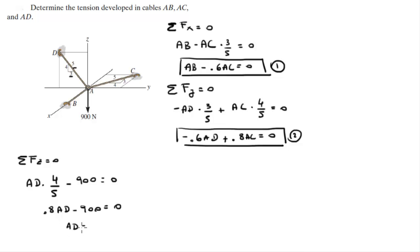Which means that AD is equal to 1125 newtons. When you plug in AD into equation 2, you get that AC is equal to 843.75 newtons. And when you plug in AC into equation 1, you get that AB is equal to